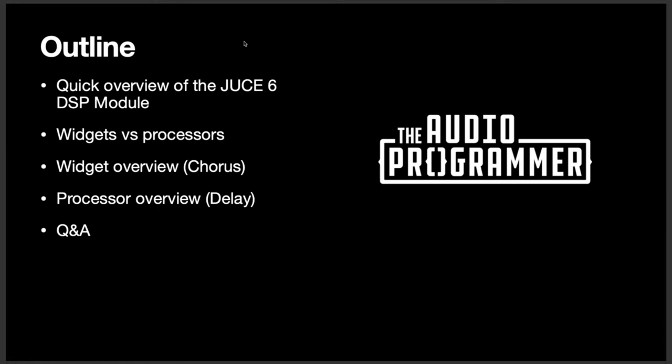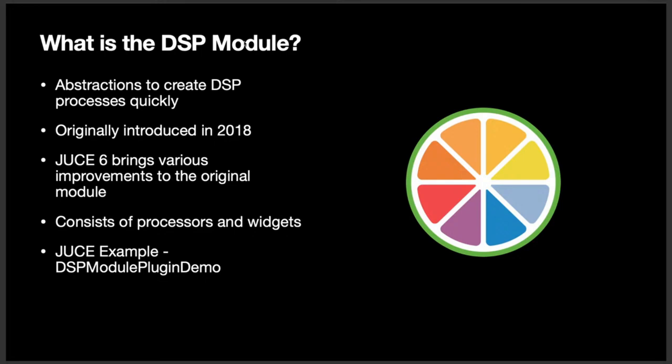So what is the JUCE DSP module? The DSP module is a way that we're able to create abstractions very quickly. So rather than having to write a delay or a chorus or a filter on your own from scratch, which would take a very long time, especially if you're just learning, the JUCE team and some other people such as Ivan Cohen, who's a DSP engineer over in France, have taken the time to actually write some of these abstractions for you — some of these algorithms. So you don't have to start from scratch.